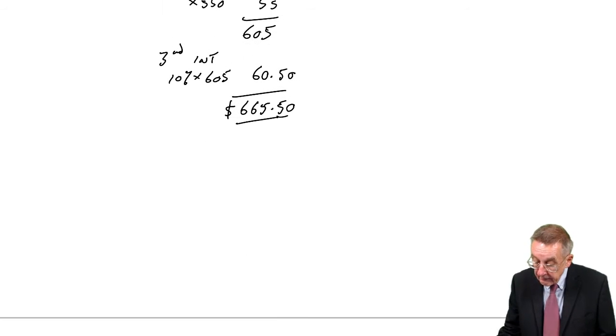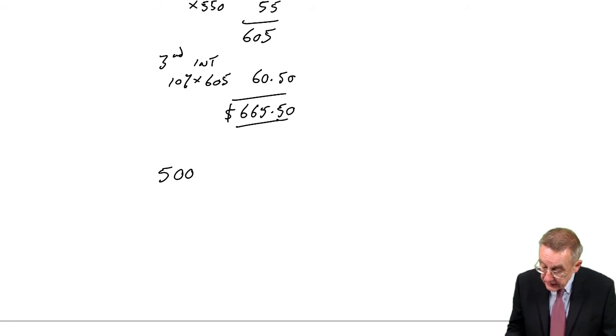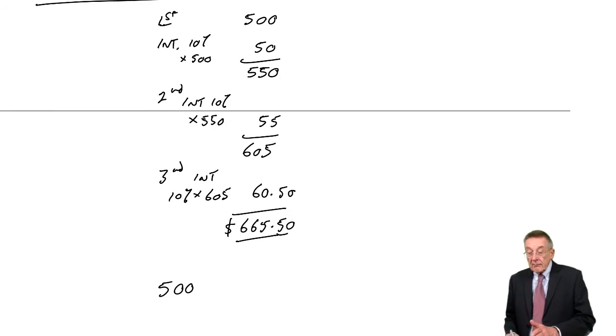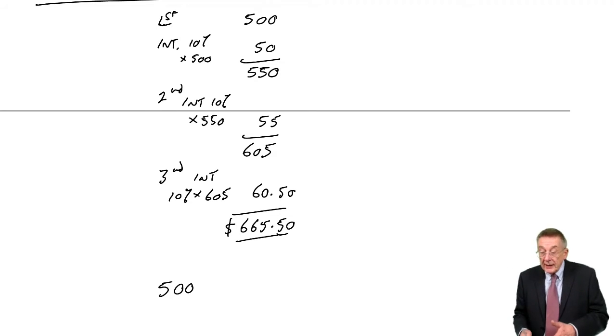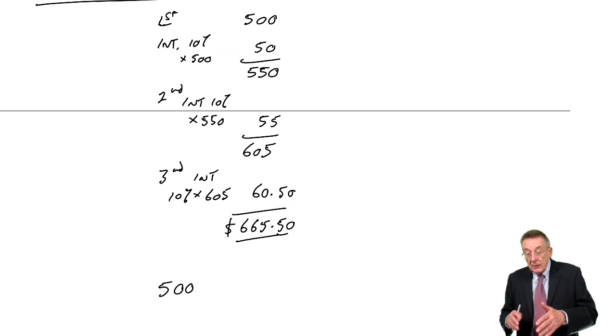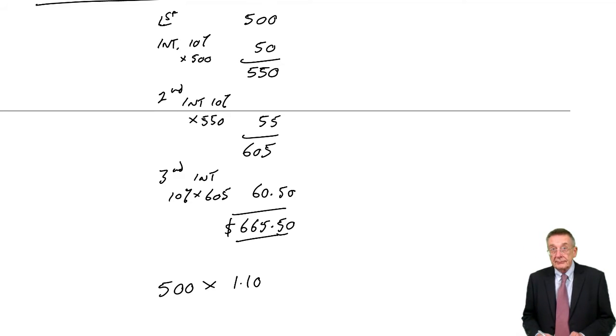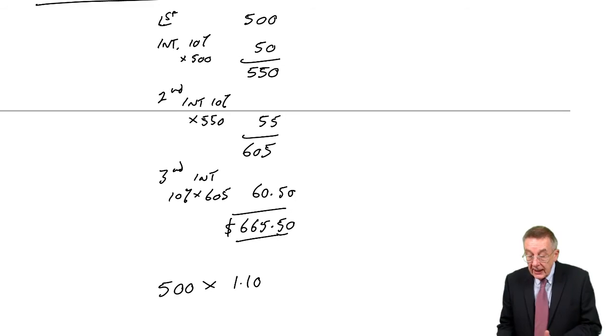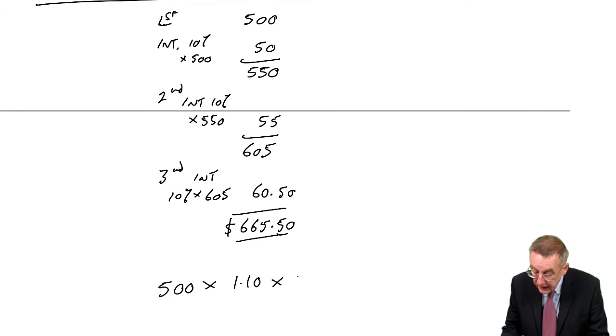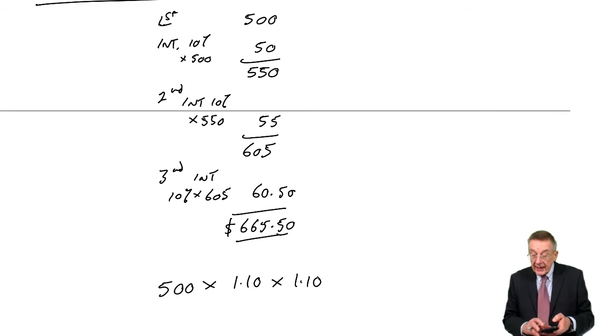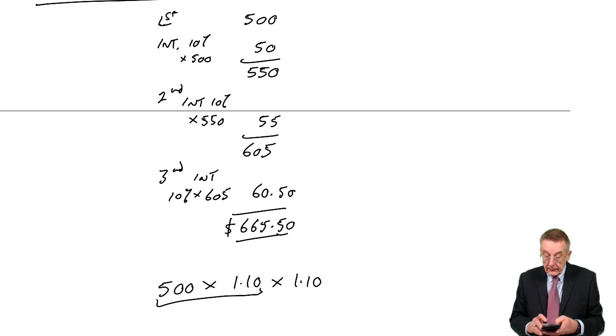So there is a quick way of dealing with it. Think about it, he started with $500. At the end of the first year he has the $500 plus 10% or 0.1 of 500. So 500 plus 0.1 of 500, well it's the same as multiplied by 1.10. 500 times 1.10 is 550. And then what happens the second year? We've got that $550 but we add on 0.1 of the whole amount, we multiply by 1.1 again. And if you multiply by 1.1 again, 550 multiplied by 1.1 comes to 605.